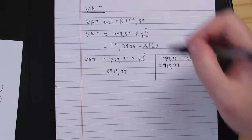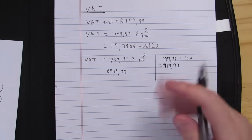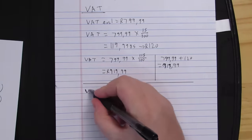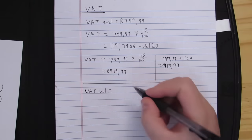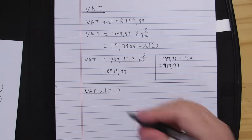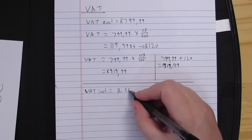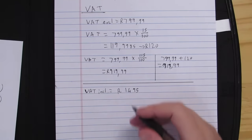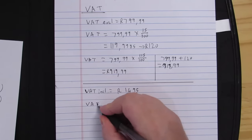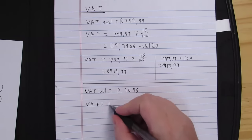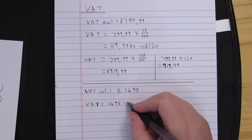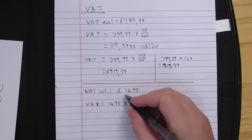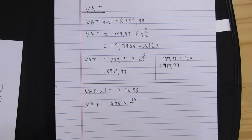Now, instead of having my VAT exclusive amount, what I've been given is my VAT inclusive amount. Let's make this a separate example. Say we're going to work with 1,495 Rand. If I wanted to work out how much VAT was put on that, my VAT will be equal to my 1,495. What I want is my VAT, so I want 15 of that. What I've been given is my VAT inclusive amount — remember, that is 115.